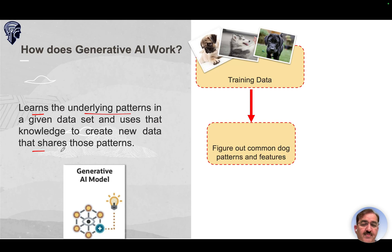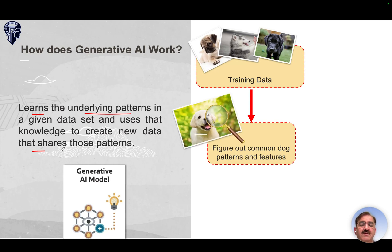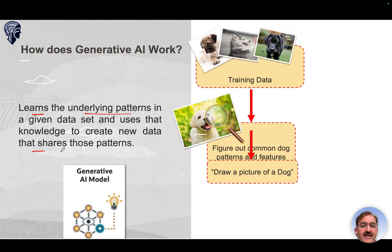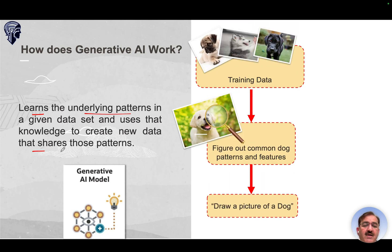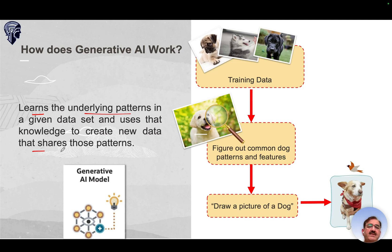The objective of the model is to figure out common dog patterns and features. Once trained on the dataset with various breeds of dogs, we can ask the model to draw a picture of a dog, and it will do so based on its acquired knowledge. That is what Generative AI is all about.